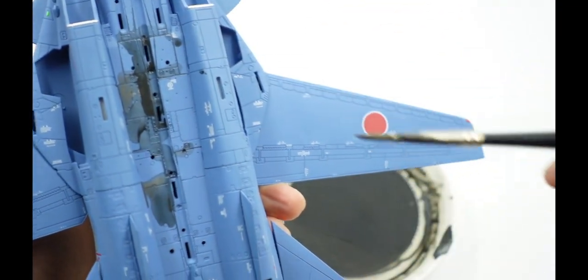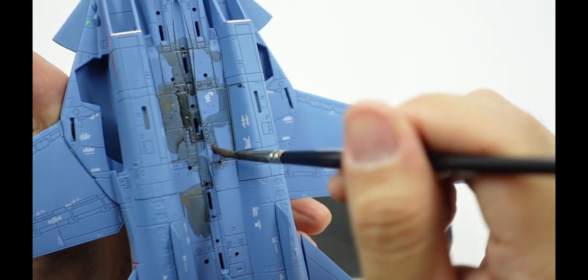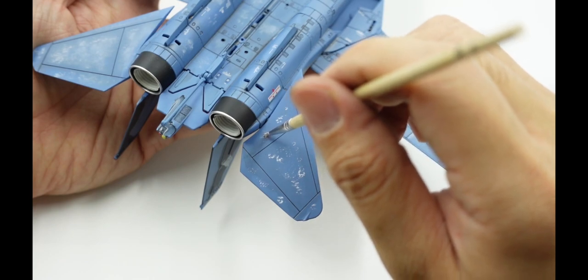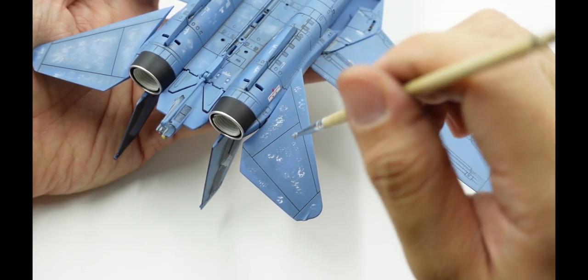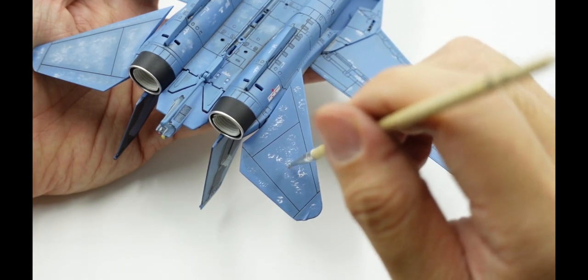The applicator is for you to line the panel lines with the oil paint. The sporter is what you would use to put on the lighter shade on the surface panel of the model.